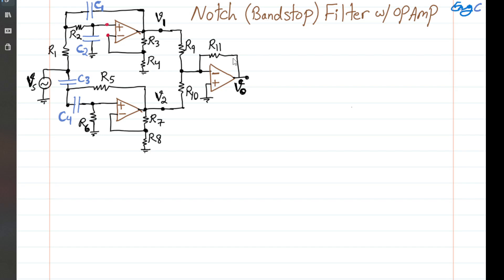With that in mind, at super low frequency, the impedance of a capacitor is 1 over jCω in sinusoidal steady-state analysis. When frequency ω is close to DC, the denominator approaches zero and the whole impedance goes to infinity — caps are open circuit at super low frequency. Therefore, C3 is open at super low frequency, Vs is not going to the bottom op-amp, so V2 will be zero at super low frequency.